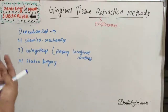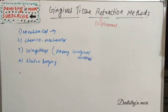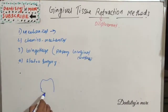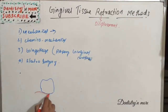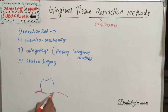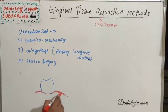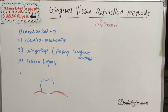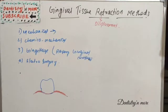Starting with the first method — mechanical tissue dilation. It is one of the earliest methods used for physically displacing the gingiva. The approaches include impression material-filled copper band or tube, rubber dam, acrylic resin, and temporary metal crown. All these can be used to physically displace the tissue from the tooth.